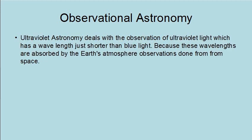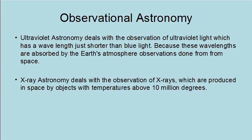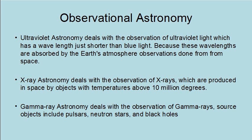Ultraviolet astronomy deals with the observation of ultraviolet light, which has a wavelength just shorter than blue light. Because these wavelengths are absorbed by the Earth's atmosphere, observations are done from space. X-ray astronomy deals with the observation of X-rays, which are produced in space by objects with temperatures above 10 million degrees. Gamma ray astronomy deals with the observation of gamma rays; source objects include pulsars, neutron stars, and black holes.